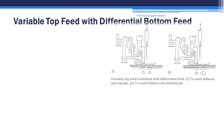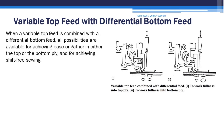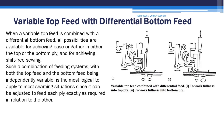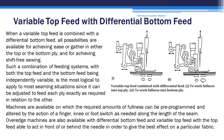Variable top feed with differential bottom feed. When a variable top feed is combined with a differential bottom feed, all possibilities are available for achieving ease or gather in either the top or the bottom ply and for achieving shift-free sewing. Figure 1 shows working fullness into the top ply; Figure 2 shows working fullness into the bottom ply. Such a combination of feeding systems, with both the top feed and the bottom feed being independently variable, is the most versatile approach since it can be adjusted to feed each ply exactly as required in relation to the other. Machines are available on which the required amounts of fullness can be pre-programmed and altered by the action of a finger, knee, or foot switch as needed along the length of the seam. Overlock machines are also available with differential bottom feed and variable top feed, with the top feed able to act in front of or behind the needle to give the best effect on a particular fabric.